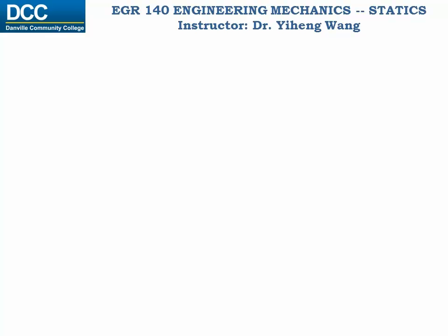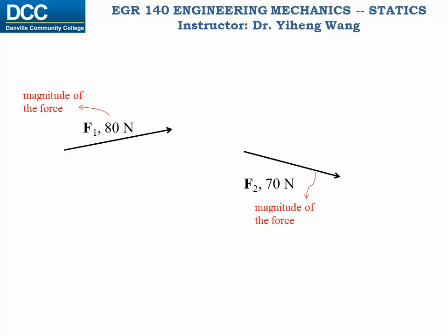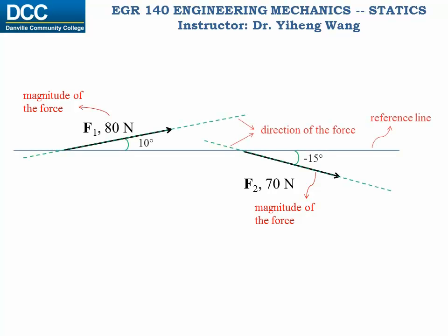When we sketch vectors, for example two force vectors, we use arrows. The length of the arrow represents the magnitude of the vector, and the direction of the vector is represented by an angle between the arrow and a chosen reference line.